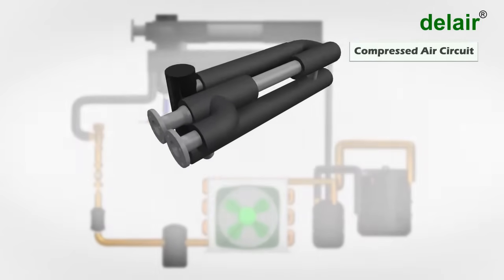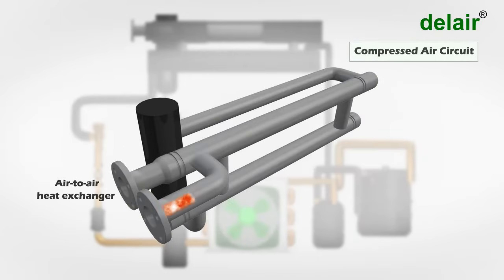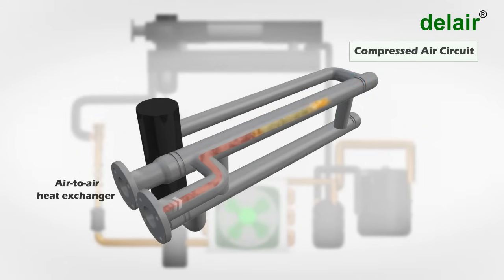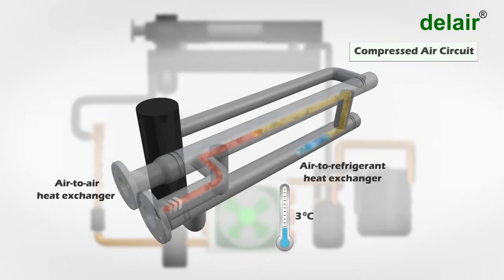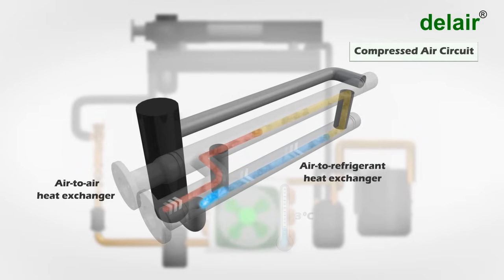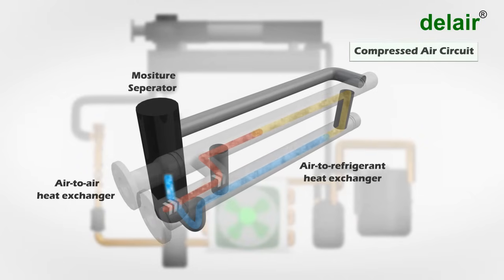In the compressed air circuit, the hot compressed air from an external air compressor enters into the air-to-air heat exchanger where its temperature is reduced by the outgoing cool dry air. The air then enters into the air-to-refrigerant heat exchanger where it is cooled to 3 degrees Celsius by the liquid refrigerant. This process causes the moisture to condense into liquid water. The cool air along with water droplets enters into the moisture separator where the water is separated from compressed air and drained through the auto drain valve.